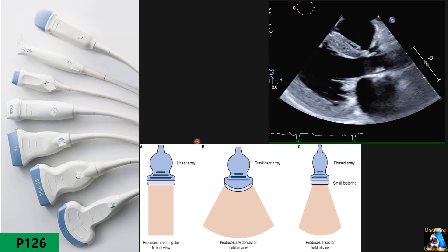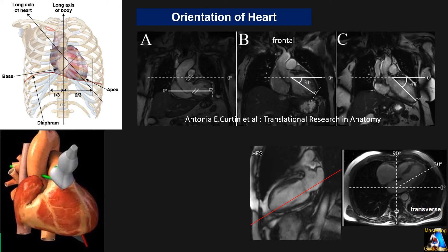Now let's continue with the anatomy of the heart. As you can see, the heart is not completely at midline — one third is on the right side of the midline and two thirds on the left side. The heart is cone-shaped with one tip called the apex and one base. The line that passes through the apex to the base we call the long axis, and any plane perpendicular to the long axis we call the short axis, which can be at different levels: the base, the middle, or the apex.